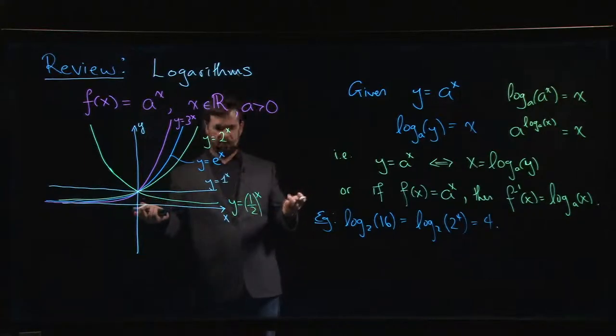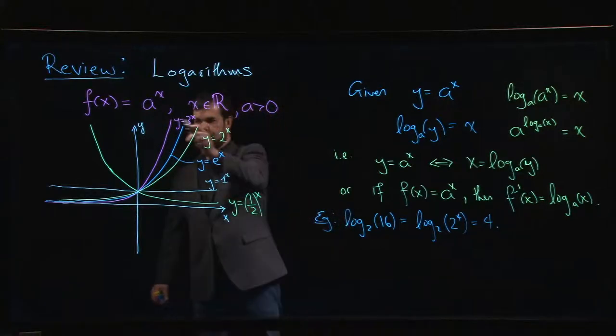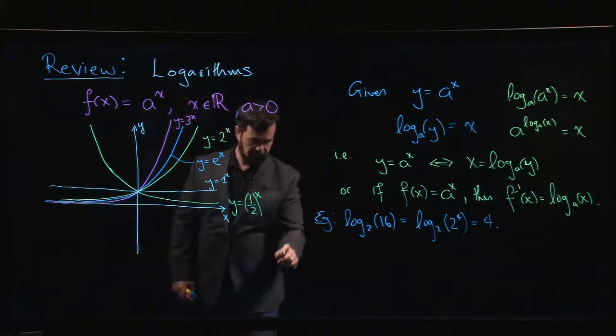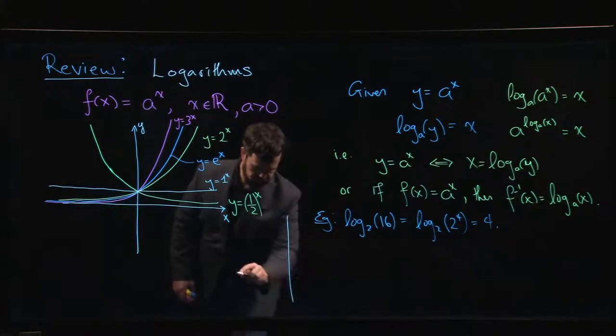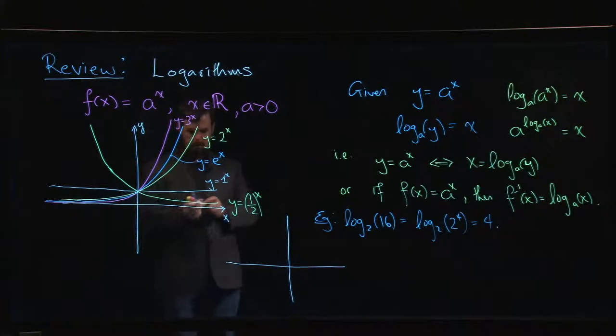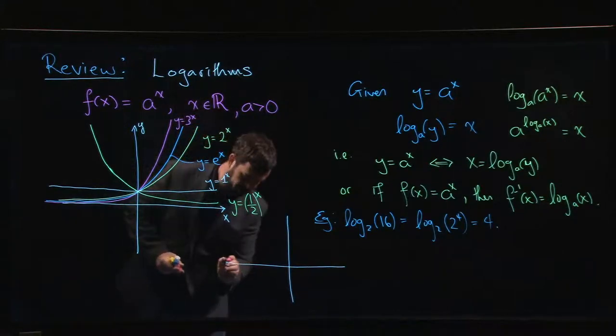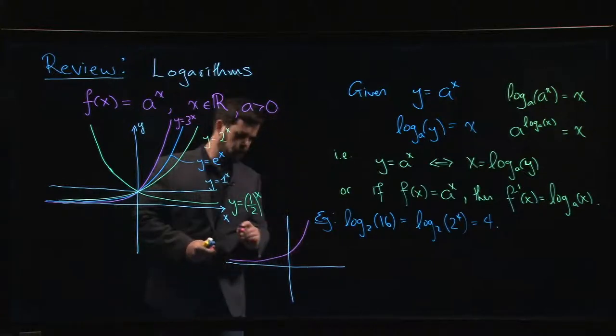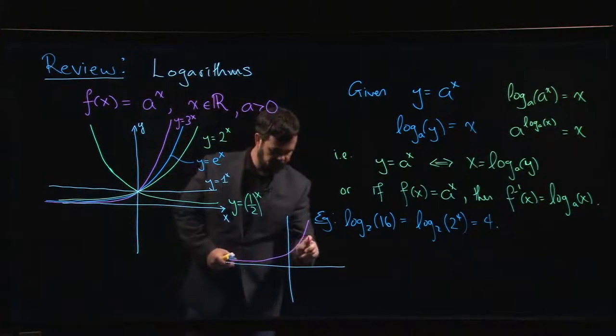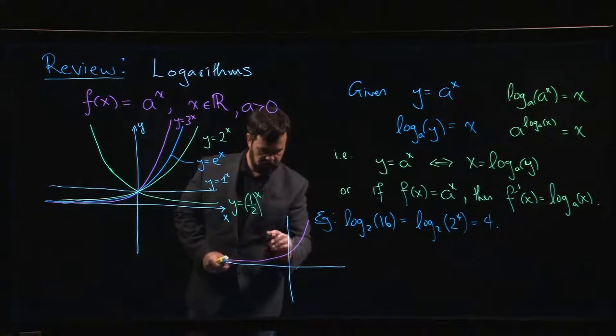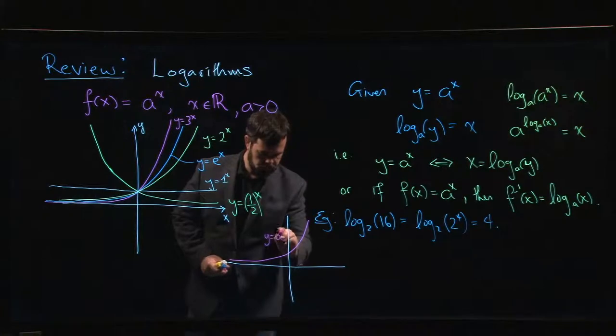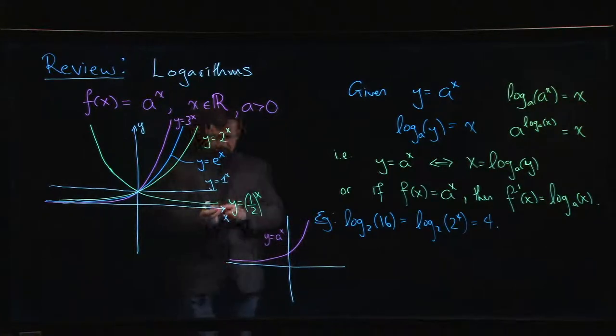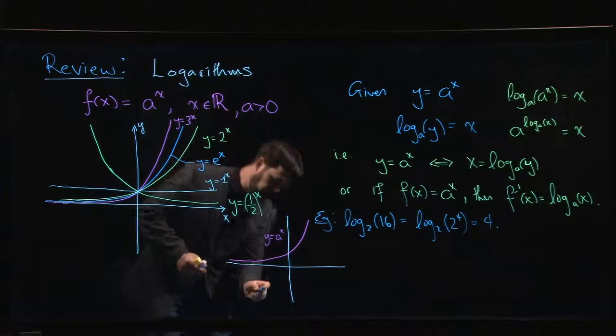The other thing you can do is you can now work out what the graph should look like for a logarithm. If this is what the graph looks like for an exponential function, let's put it down here. So if we have some exponential function like this, here is y equals a to the x.